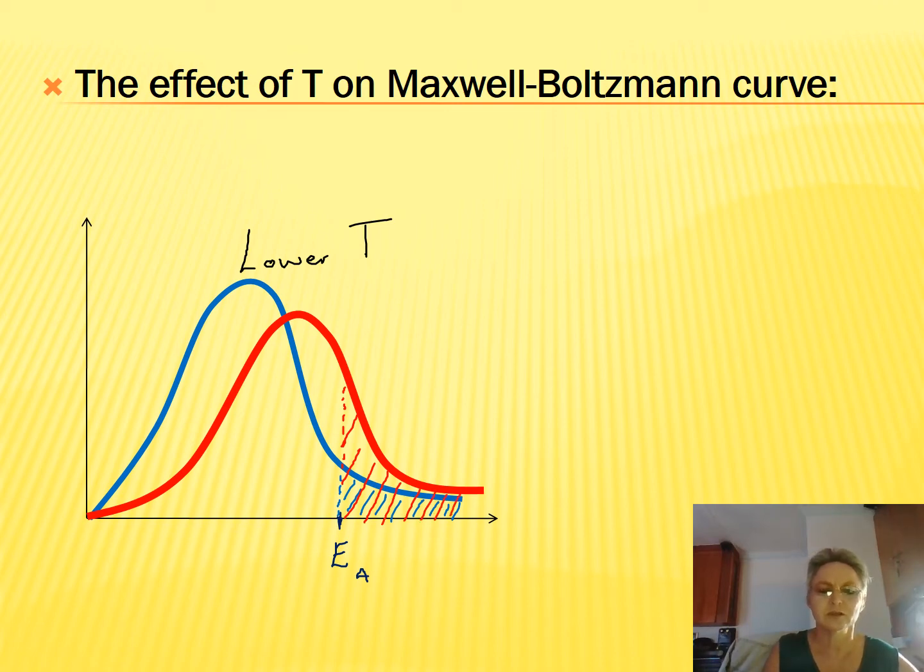And if we use the collision theory, the reason why the reaction will take place faster at a higher temperature is because the particles are moving faster, so they collide more vigorously, and more of them will have activation energy or energy higher than activation energy. So the effective collisions will happen faster.